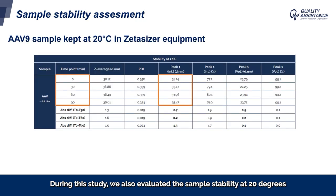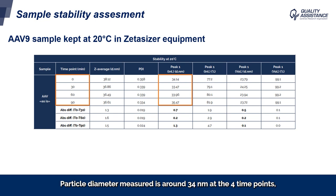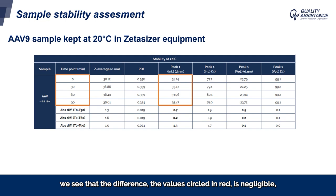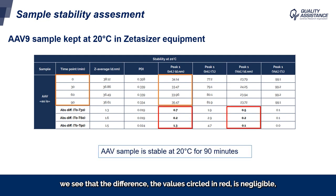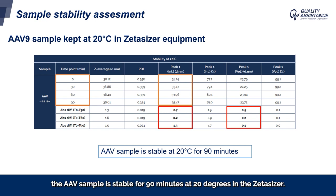During this study, we also evaluated the sample stability at 20°C by performing measurements at T0 and at three other time points: 30, 60, and 90 minutes. Particle diameter measured is around 34 nanometers at the four time points, circled in orange on the table. Looking at the difference measured between the different time points and time zero, the difference — the value circled in red — is negligible for the diameter, for measurements both by intensity and by volume. In conclusion, the AAV sample is stable for 90 minutes at 20°C in the Zetasizer.